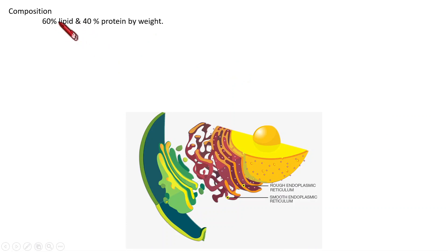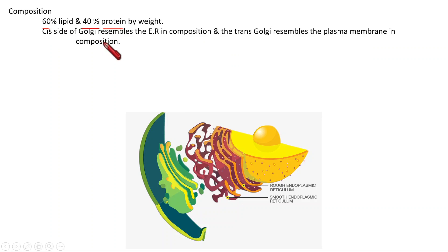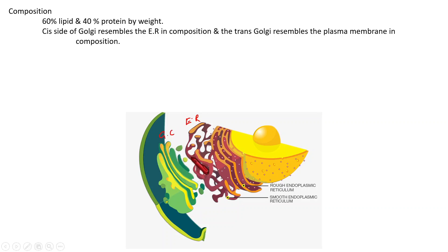Regarding composition, the Golgi complex is composed of 60% lipid and 40% protein by weight. The cis side of the Golgi resembles the endoplasmic reticulum in its membrane composition.